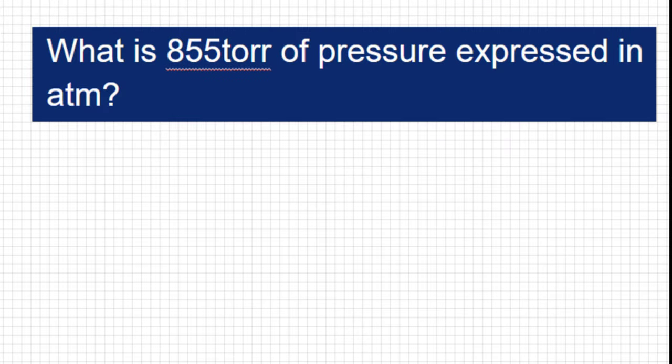Let's begin with what we know. We know that one atmosphere is equivalent to 760 torr. If you have 855 torr, then the conversion factor you can use is one atmosphere over 760 torr or 760 torr over one atmosphere.